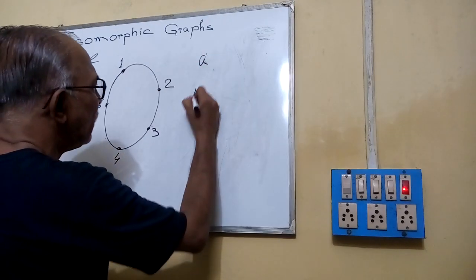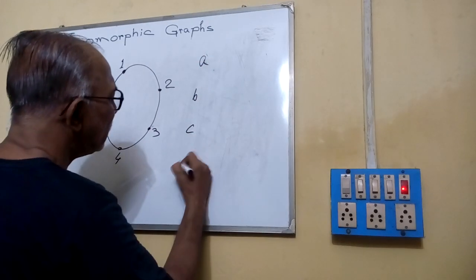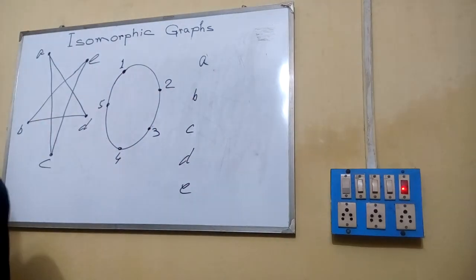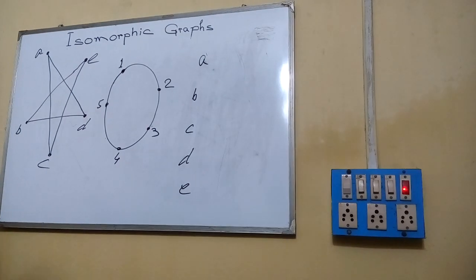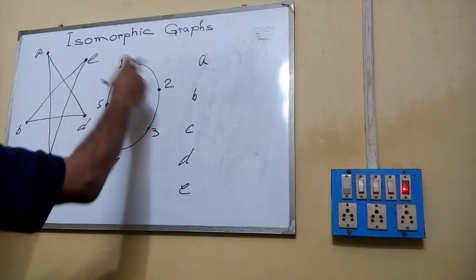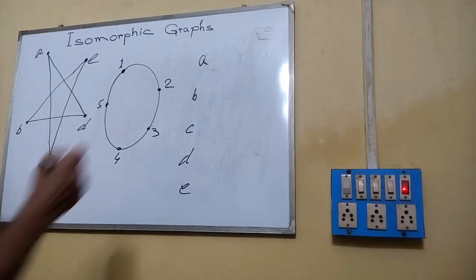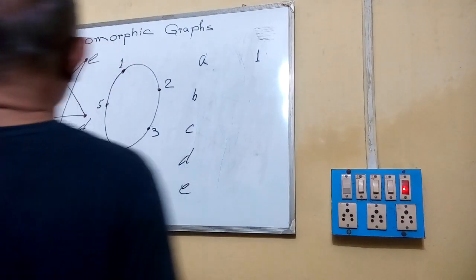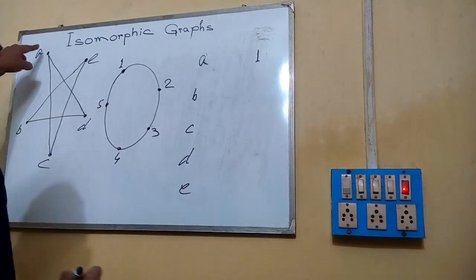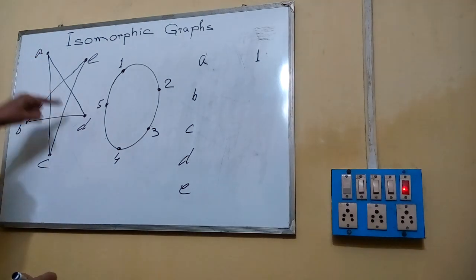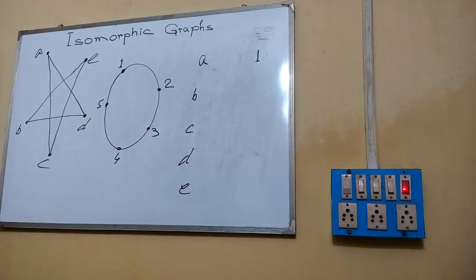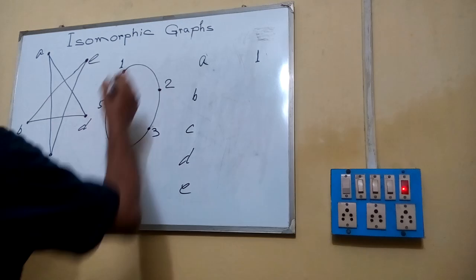We need to prove that vertices A, B, C, D, E have a corresponding relation with vertices 1, 2, 3, 4, 5. If we are associating A with 1, from A there is an edge going to D. So if we are associating D with 5, then edge AD corresponds to edge 1-5.